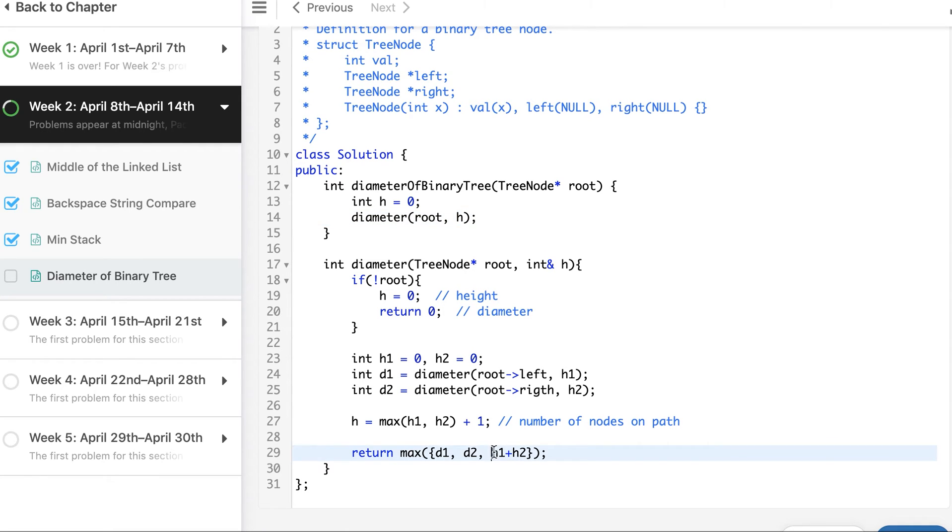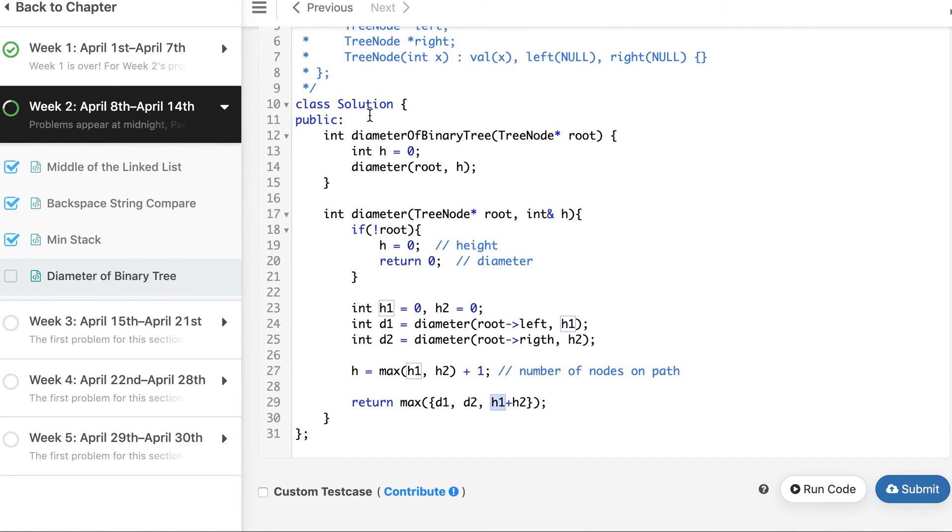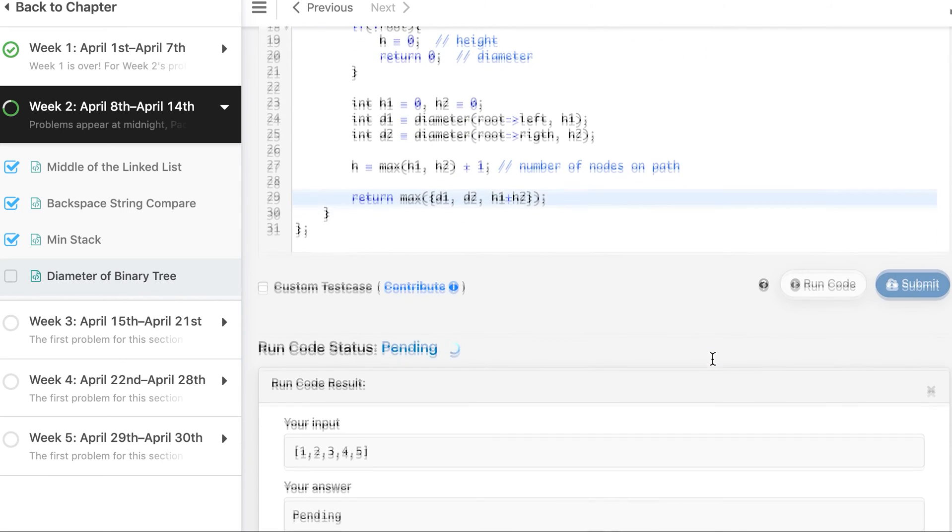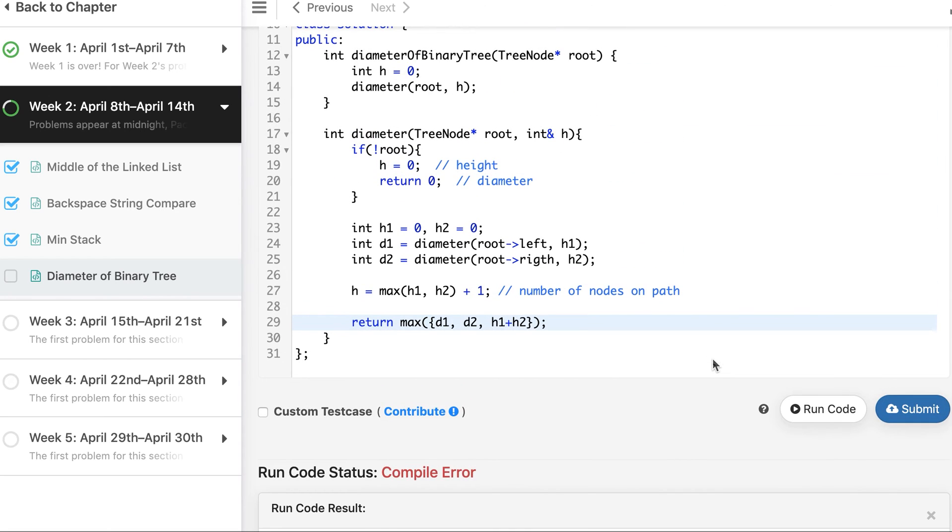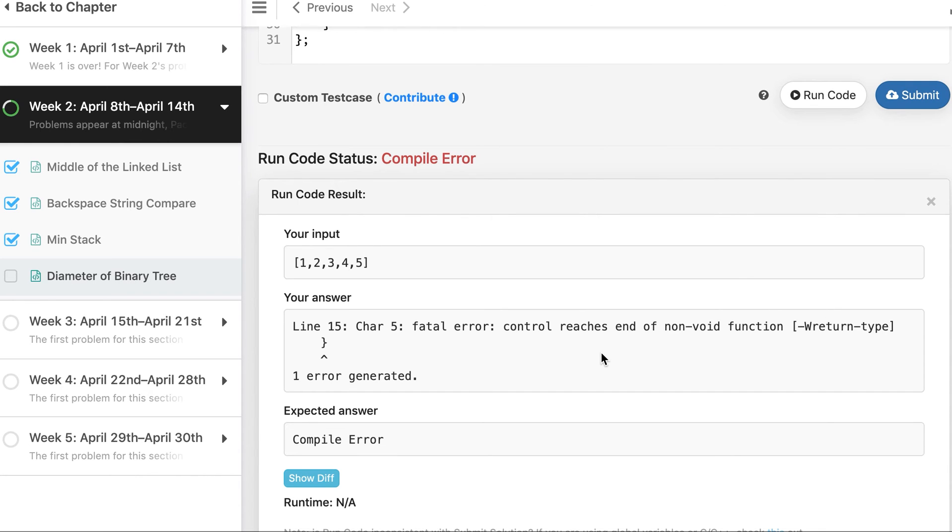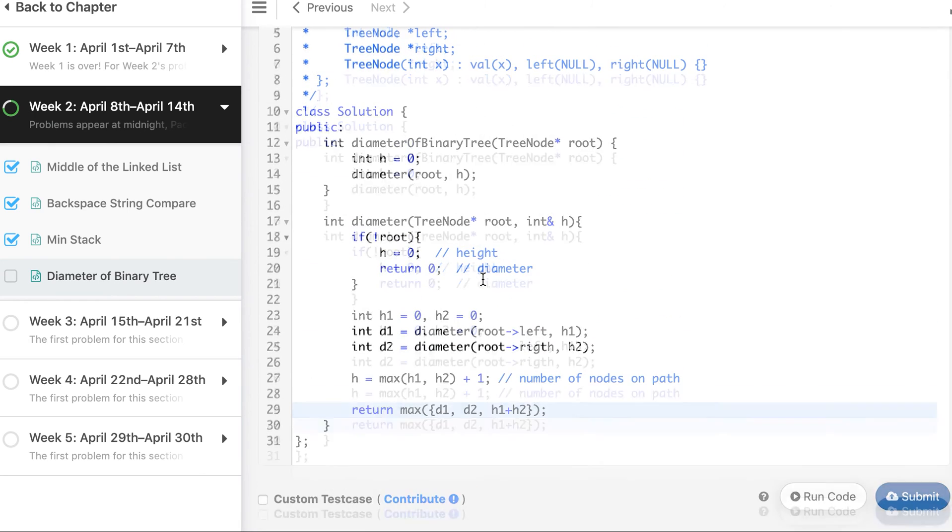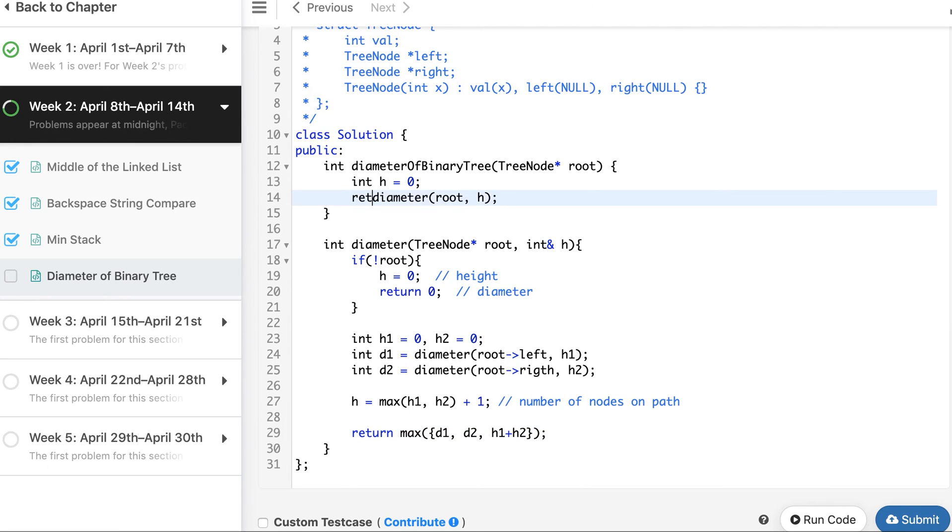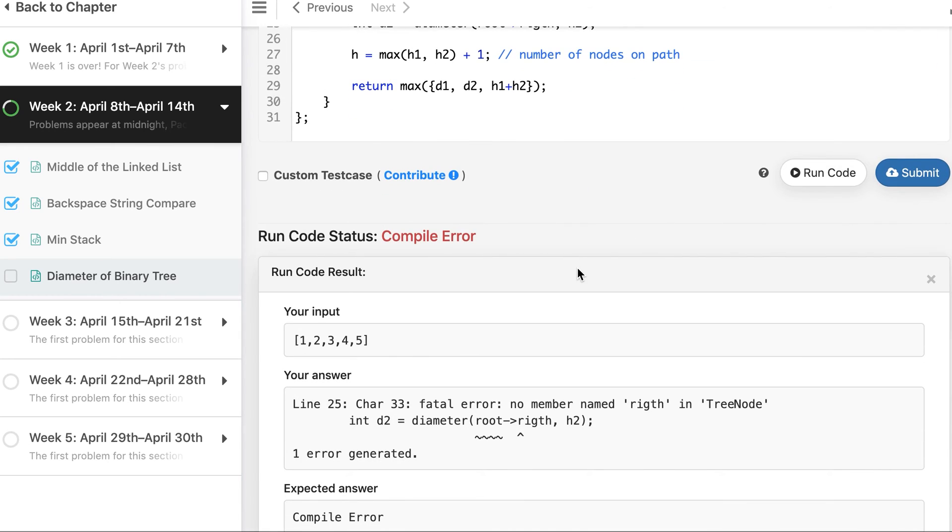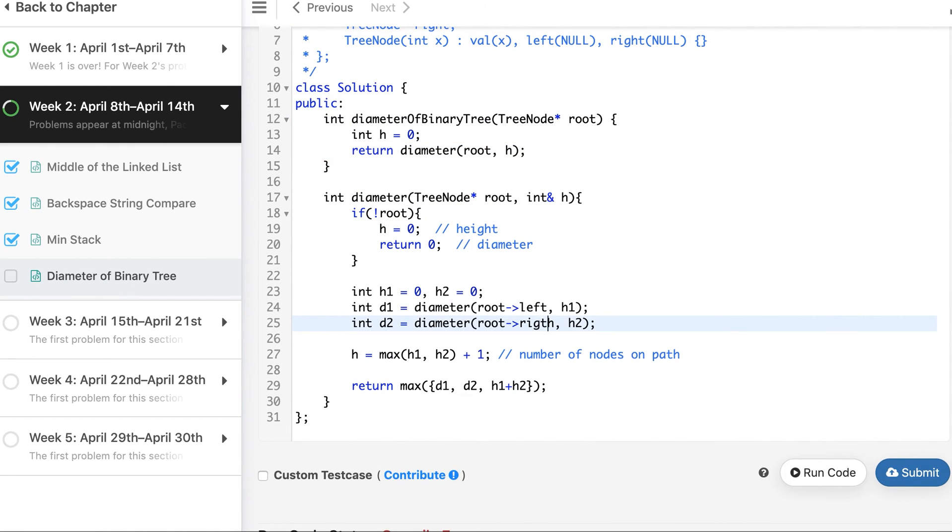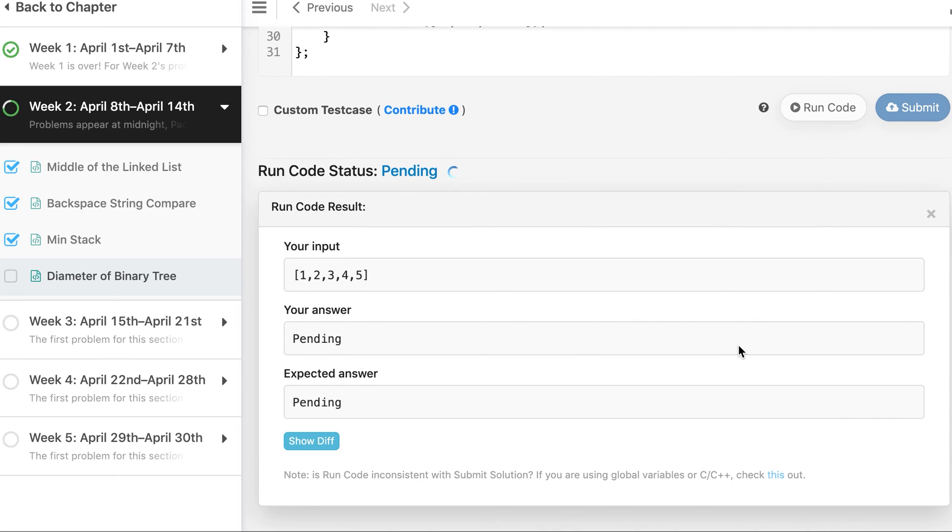And here we just need to call this. So h1 denotes from root till deepest node number of nodes and h2 denotes from root till deepest node. Let's run it on our example. What's the line number 15? Okay, we are not calling return. Again, typo. So it works correctly.